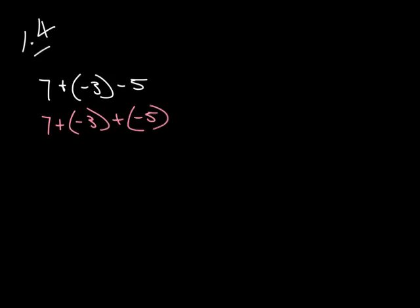Remember from last time: add these two numbers together. The signs are different, so you take the difference between the two and put the sign of the largest number — positive 7 — on your answer. We're going to leave that one alone. Now we've got two numbers here; signs are different, so we take the difference between the two and put the sign of the largest number on there, and we're done.